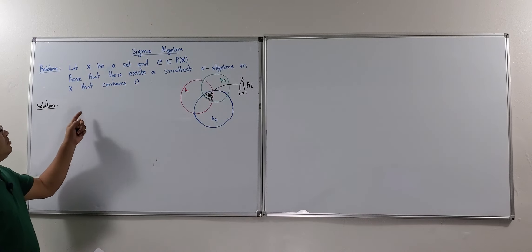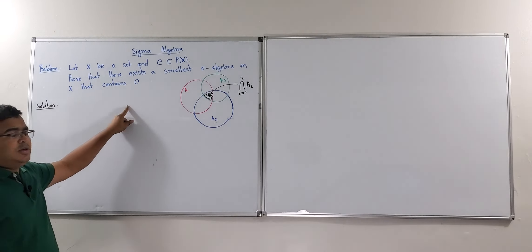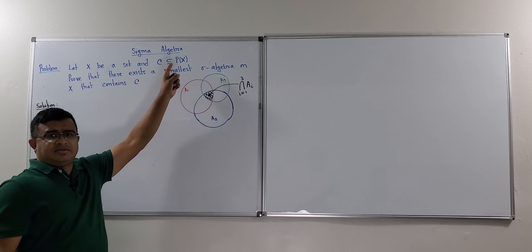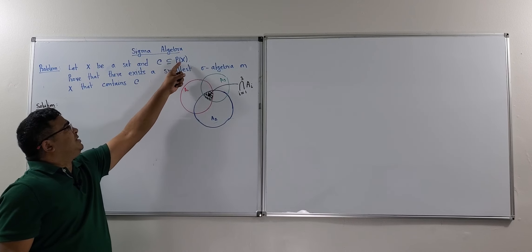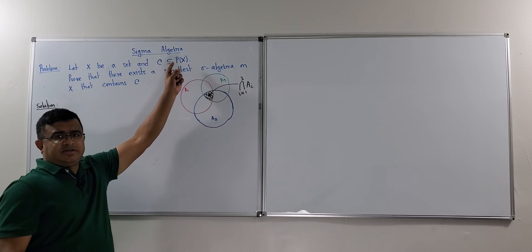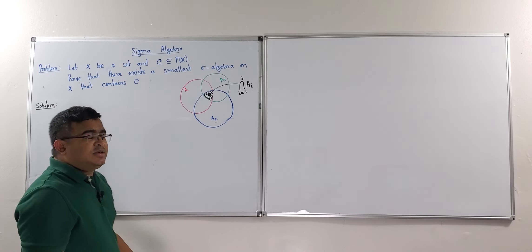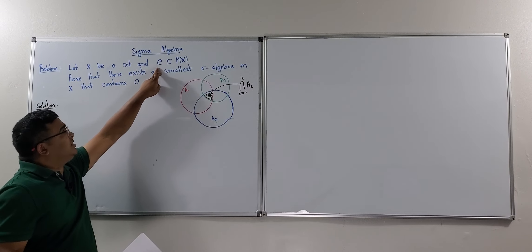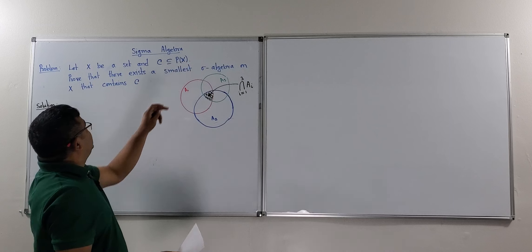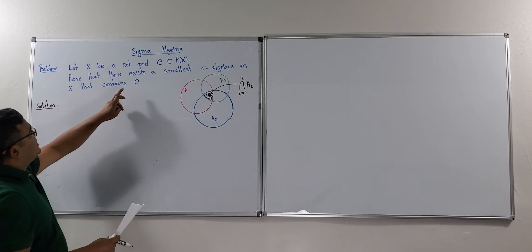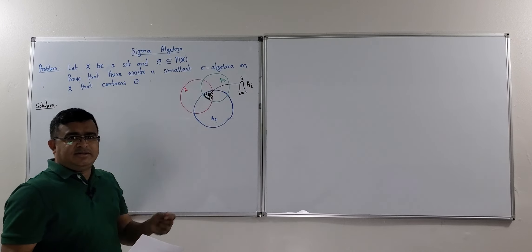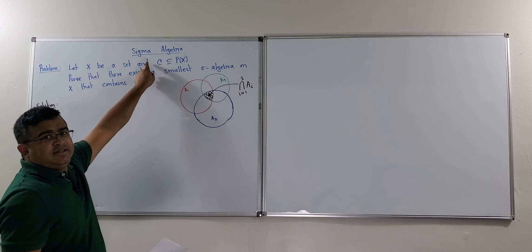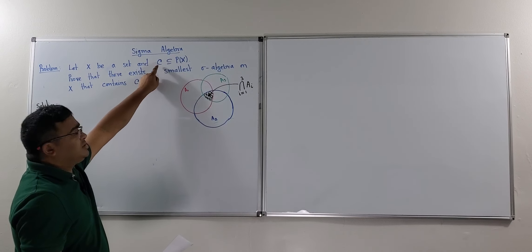In this video, we will solve this problem about sigma algebra. This problem says that if X is a set and C is a collection of subsets of that set X, where P is the power set of X — meaning the collection of all possible subsets of X — and C can be a finite number of subsets of that collection, then we need to prove that there exists a smallest sigma algebra on X that contains that collection of subsets C.